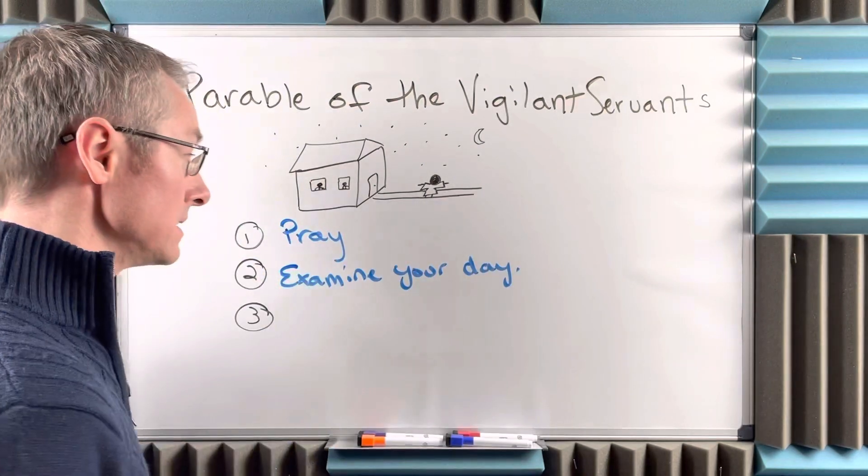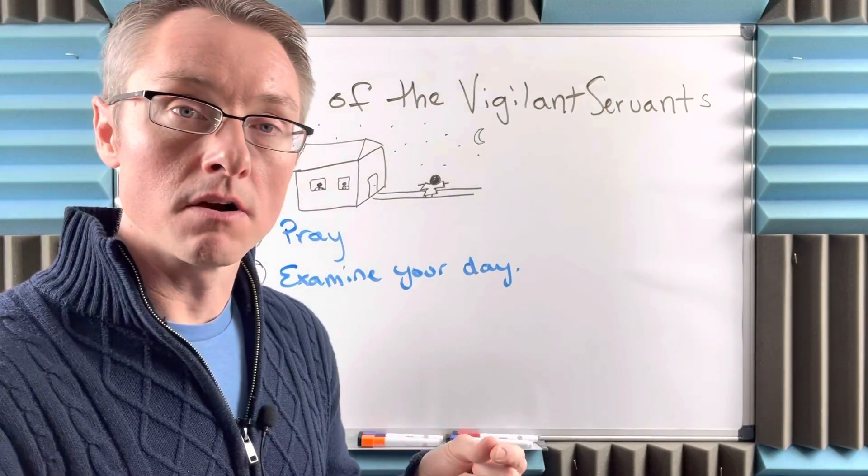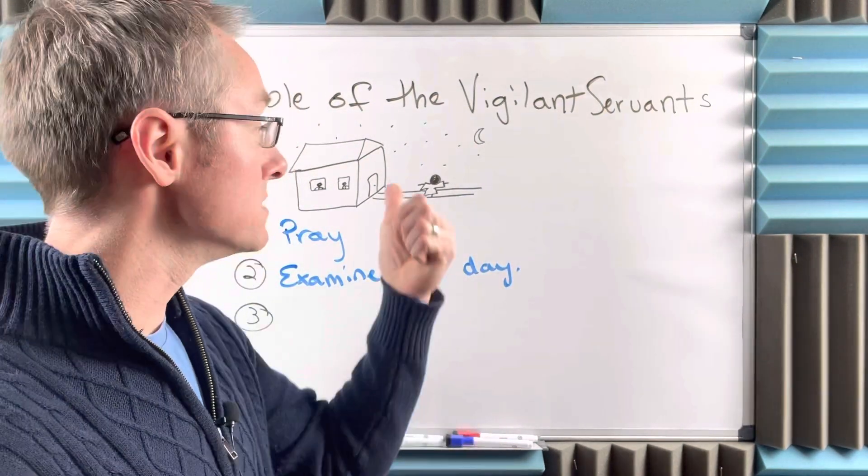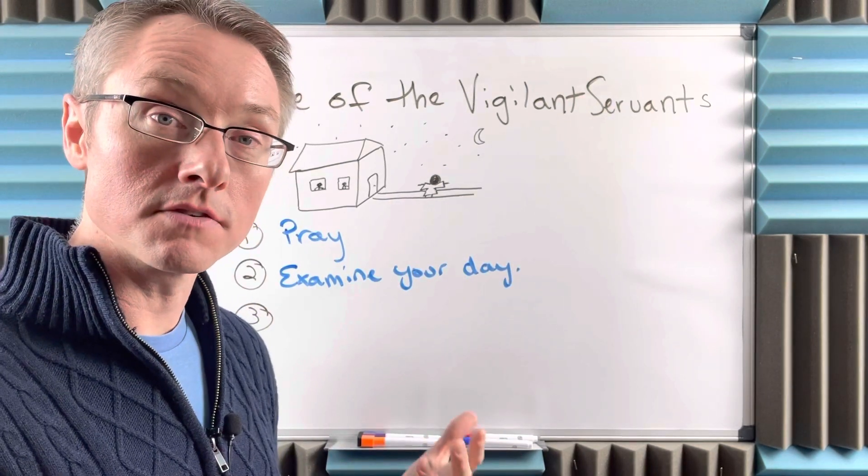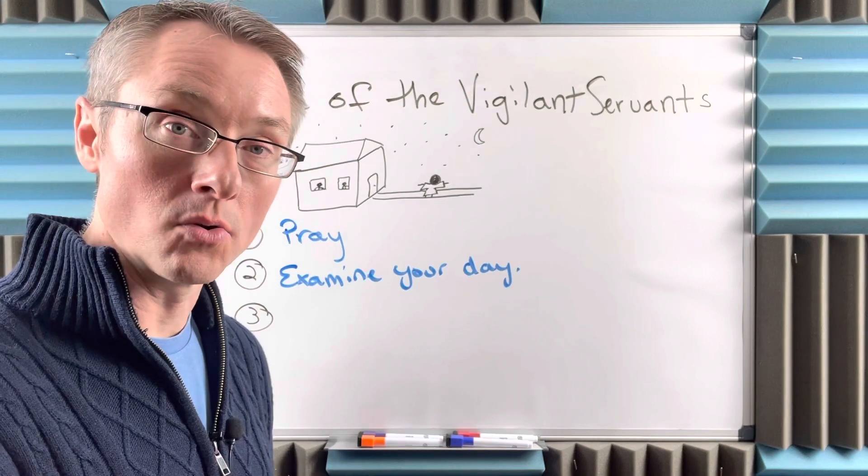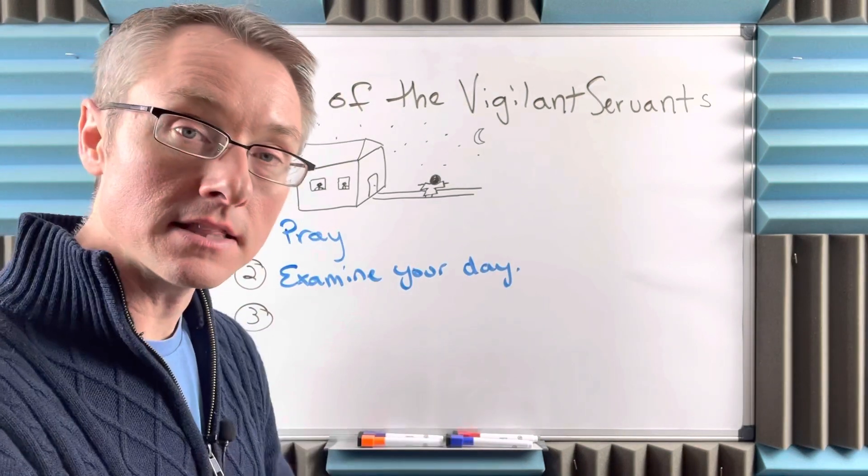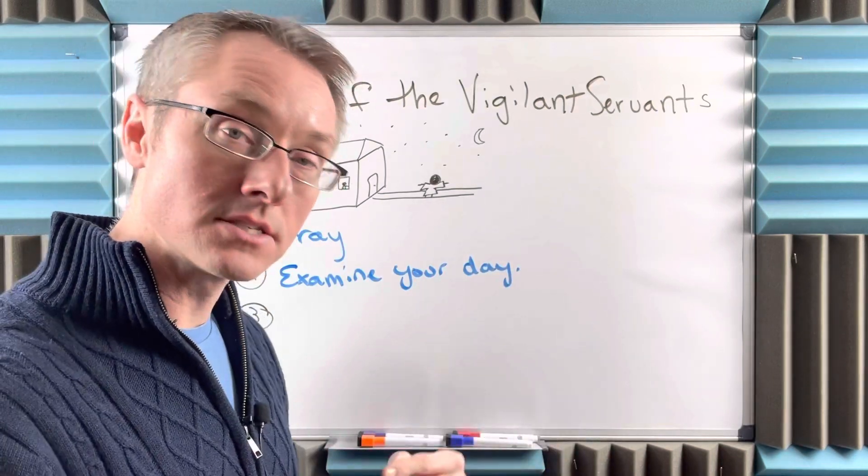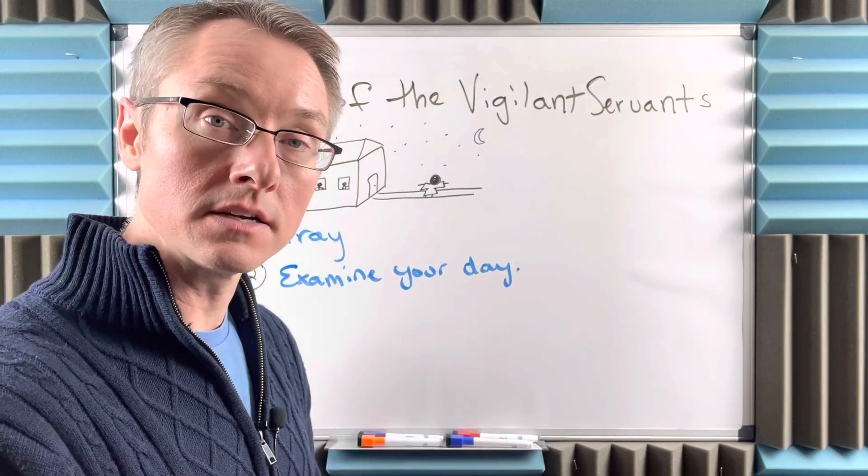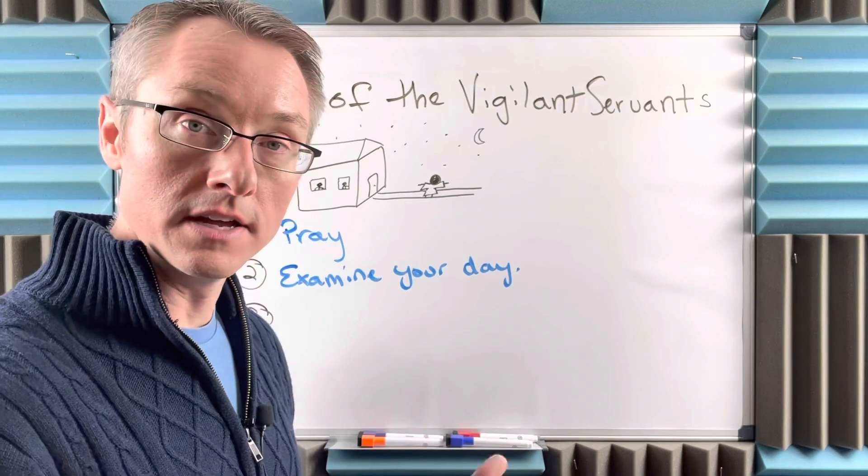And then finally, as a little twist of this parable, what does it say about what happens to the master and the servants when he returns? It says that when he finds those faithful servants waiting for him at the door, he's going to have them sit at the table and he's going to serve the servants. He's going to serve them for being so ready for his return.